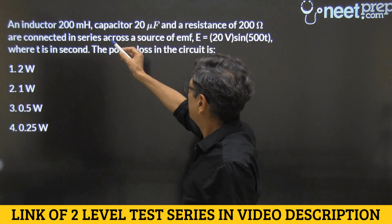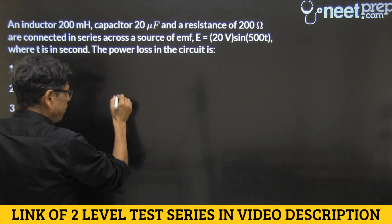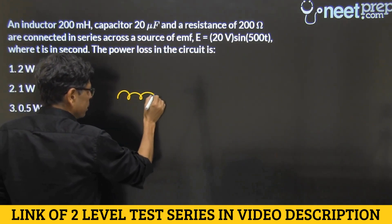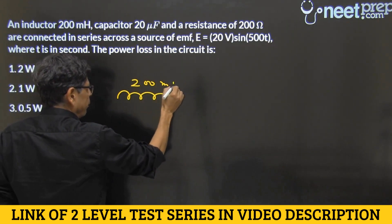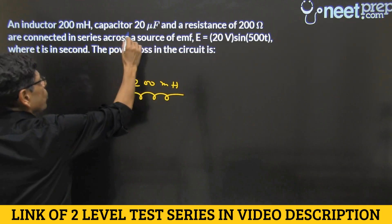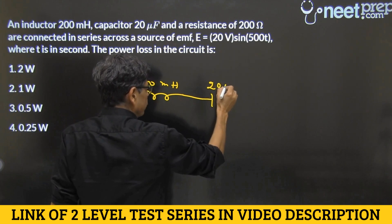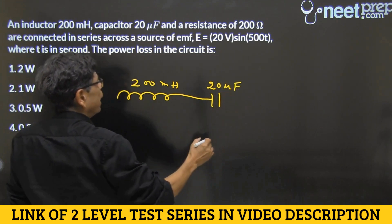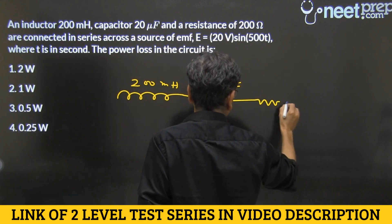So, in this question, we have an inductor of 200 mH, here it is, 200 mH inductor, 20 microfarad capacitor, and there is a resistance of 200 ohms. It is an LCR circuit question series,